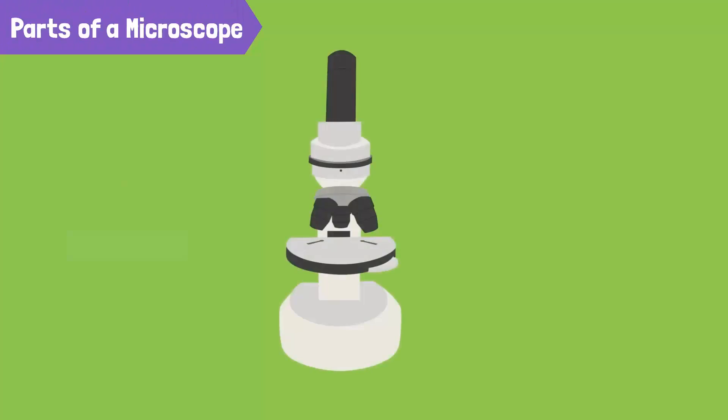To use a microscope, we put our specimen, for example, the dirt, onto the slide. Then, we mount the slide onto the stage and secure it using the clips.